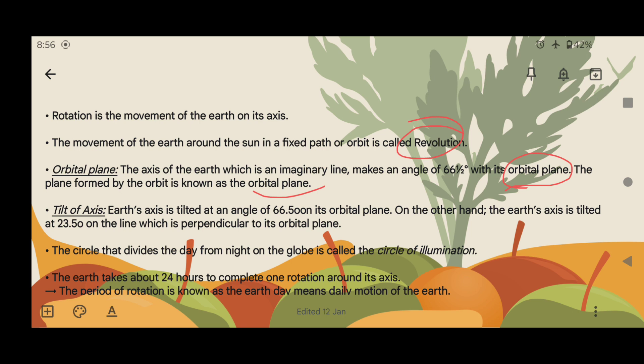The circle that divides the day from night on the globe is called circle of illumination.